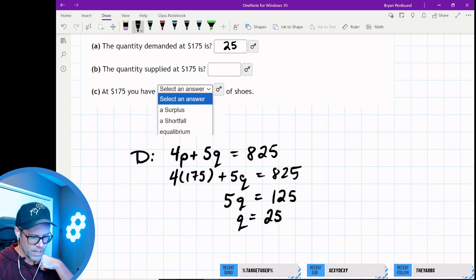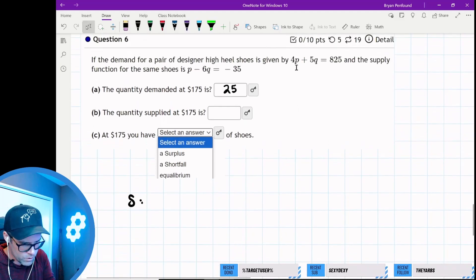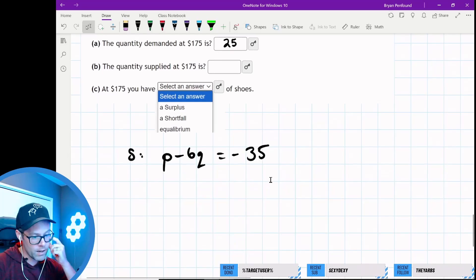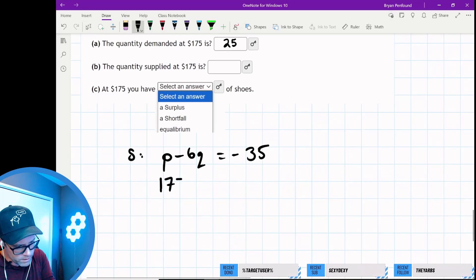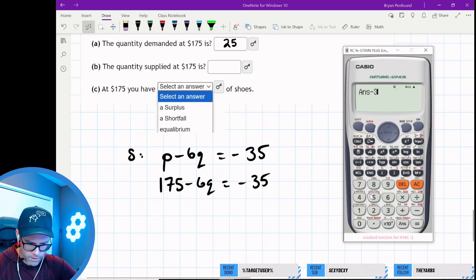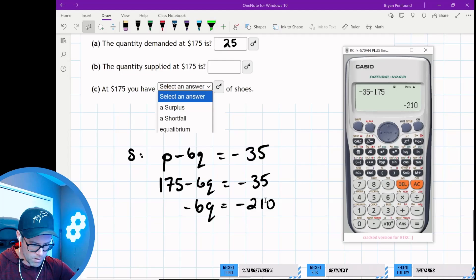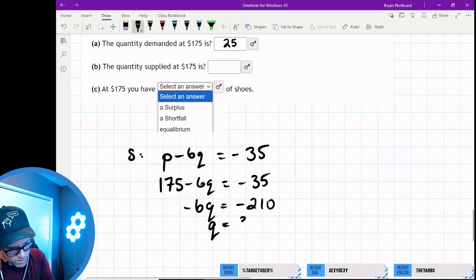For the supply function, p minus 6q equals negative 35. Again, put in $175 for the price. Negative 35 minus 175 gives us negative 210. Is negative 210 divisible by 6? It's divisible by 3 and it's even, so yes. Divide by negative 6 and swap the sign—q should be 35 units.